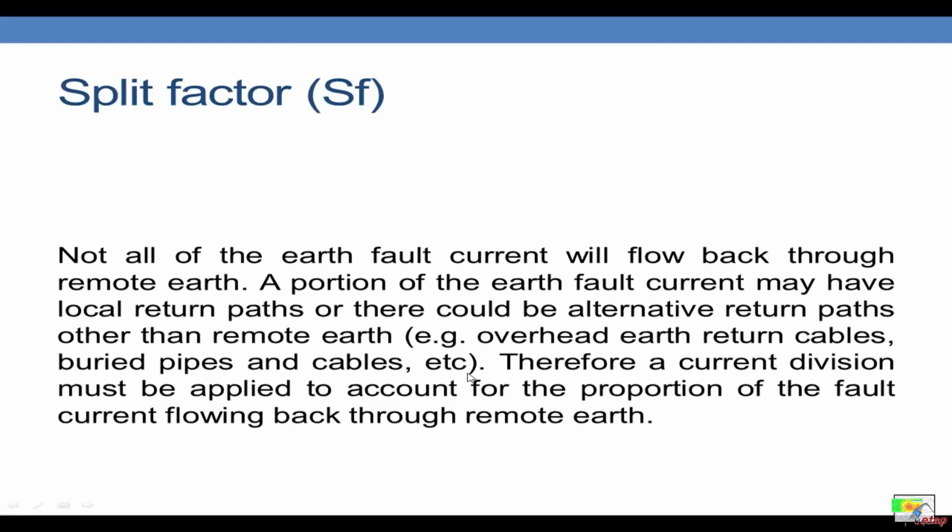Then the next term is the split factor. Not all the fault current will flow back to the remote earth. A portion of the earth fault current may have local return paths or there could be alternative return paths other than remote earth, such as overhead earth return cables, buried pipes and cables. Therefore a current division must be applied to account for the proportion of the fault current flowing back to the remote earth.